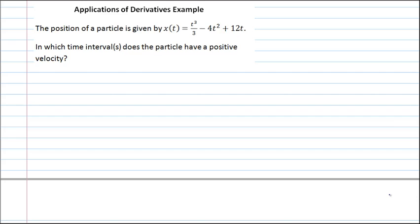So in order to solve this problem, it's important to understand how velocity and position are related. Velocity, or v of t, is just equal to x prime of t, or the rate of change of position. That is how velocity is defined.